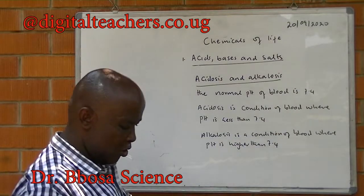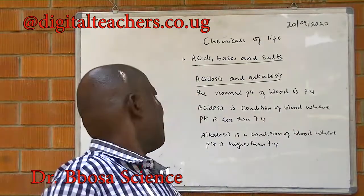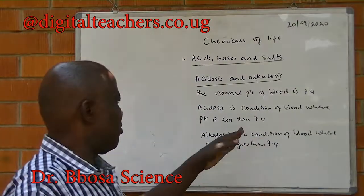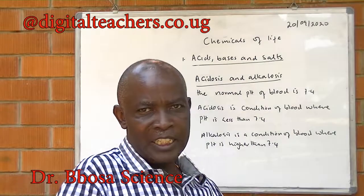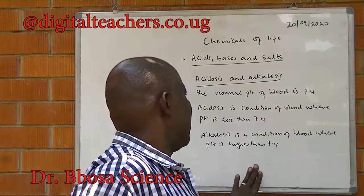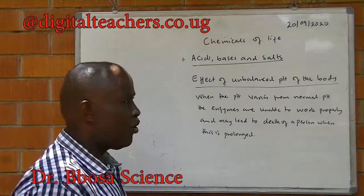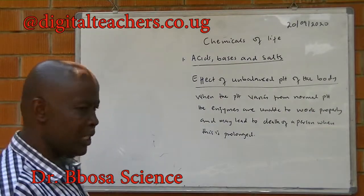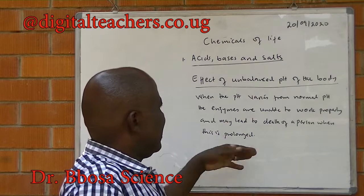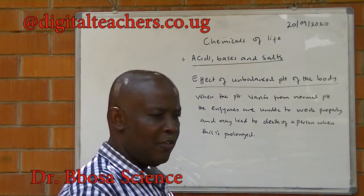Acidosis and alkalosis. The normal pH of blood is 7.04. Acidosis is the condition of blood where the pH is less than 7.04. Alkalosis is a condition of blood where the pH is higher than 7.04. When the pH varies from the normal pH, enzymes are unable to work properly, and this may lead to the death of a person.